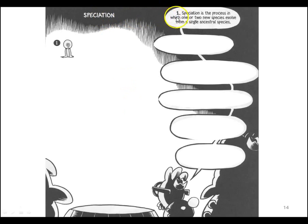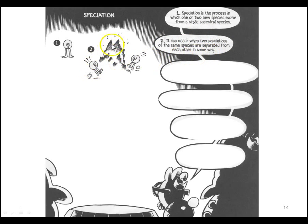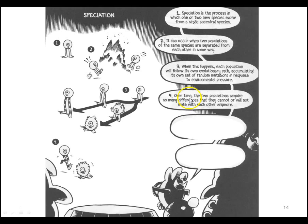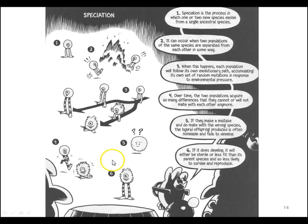So here's the way it works. Speciation is the process in which one or two new species evolve from a single ancestral species. The two populations are separated from each other in some way — in this case, sort of like a mountain arose. When this happens, each population adapts to its own environment because conditions are a little bit different. Now they acquire so many differences that when they get together, they either can't or won't reproduce with one another. If they were to reproduce, the hybrid would not be very good. If you put a hybrid in either environment, it would get out-competed and die. So from the point of view of parents, that is a huge waste of energy — essentially wasted time on an organism that will not be able to survive and produce offspring.